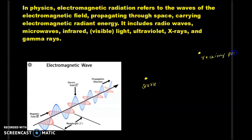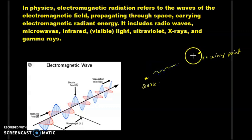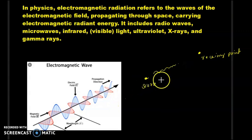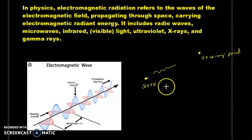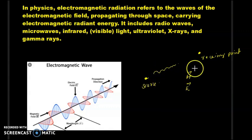There is a source emitting electromagnetic radiation and a receiving point. There exists a relationship between the rate of energy transfer and the amplitude of the electric field. What is the relationship between E, H, and the rate of energy transfer from the source?